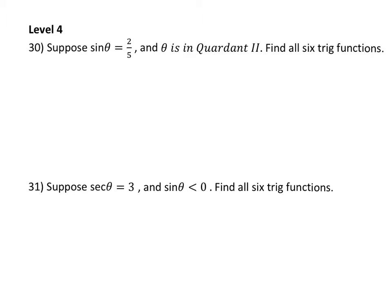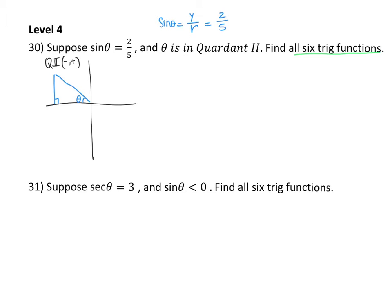For problem 30, we are asked to find all six trig functions. To do that, we need to look at our constraints. It says that sine is two over five and the angle is in the second quadrant. If I were to draw this picture, being in the second quadrant means my x is negative and my y is positive. Sine in a coordinate system is y over r, so my y value is two and my radius is five.